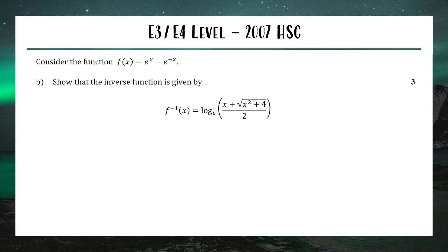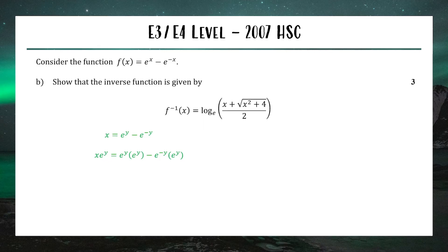Part two — find the inverse function and show it equals the given expression, worth three marks. We swap variables: x = eʸ − e⁻ʸ. To isolate y, we multiply everything by eʸ: on the left we get xeʸ; eʸ · eʸ = e²ʸ; and e⁻ʸ · eʸ = e⁰ = 1. So we have e²ʸ − xeʸ − 1 = 0. This is a quadratic in eʸ, so we substitute u = eʸ to get u² − xu − 1 = 0.